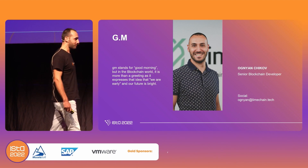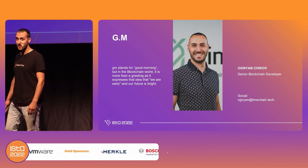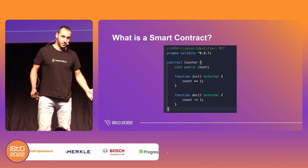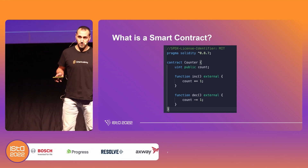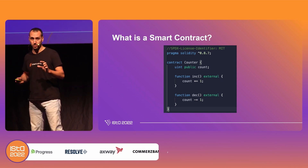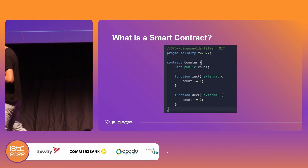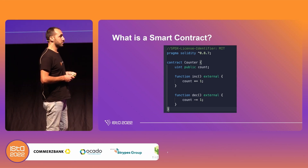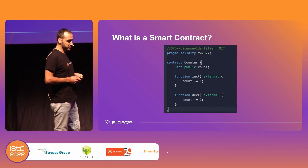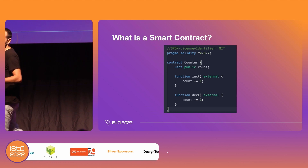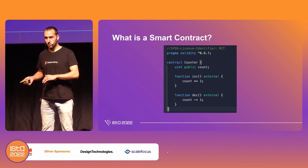Before we deep dive into the instruments of smart contract testing, let's first understand what a smart contract actually is. You may think of smart contracts as simply programs, functions, or fragments of code that are stored on a distributed, decentralized, public ledger technology called blockchain. Those fragments of code or functions can be run when certain predefined conditions are met — for example, a function inside a smart contract that can distribute an amount of tokens to some accounts.